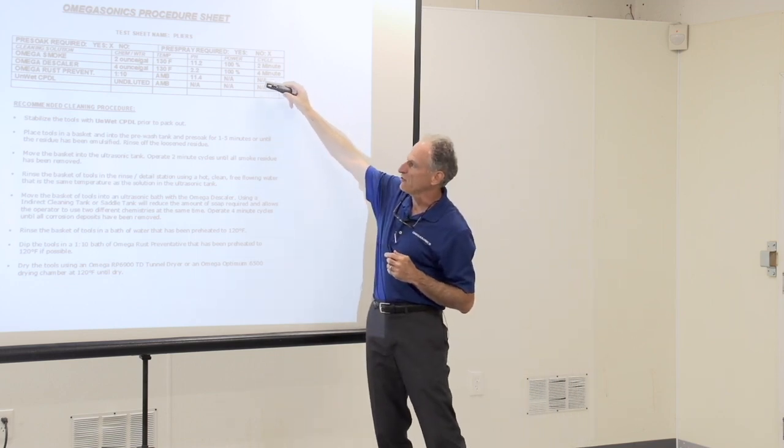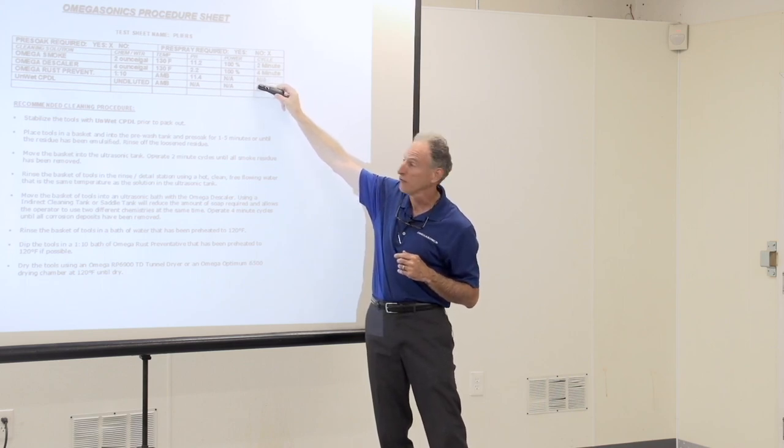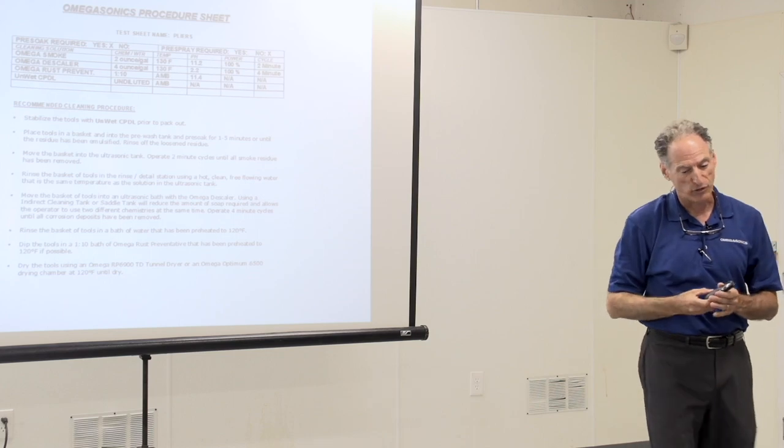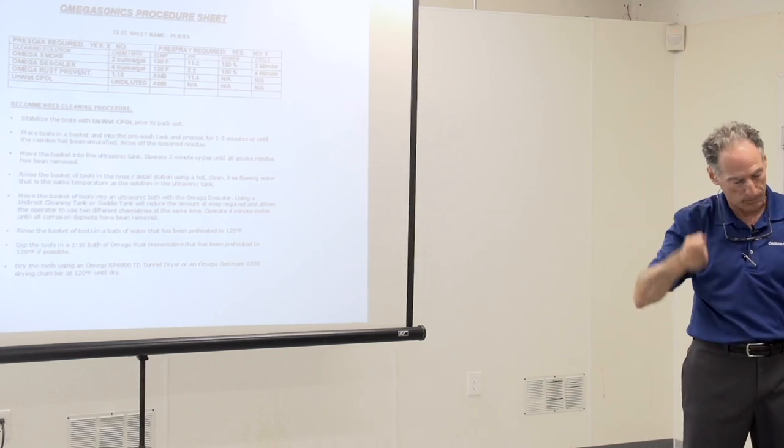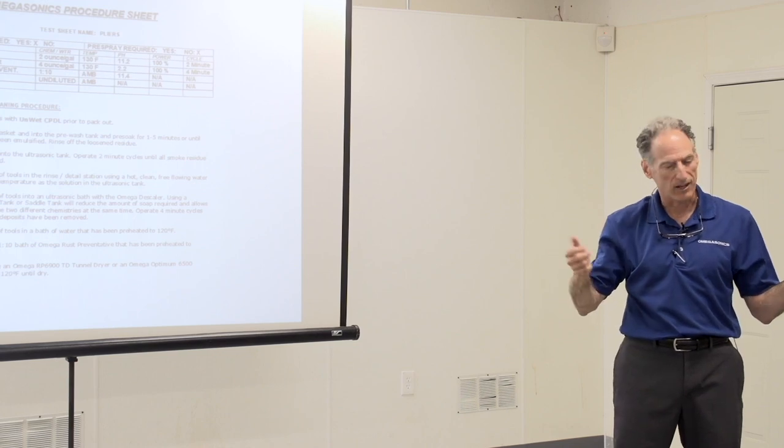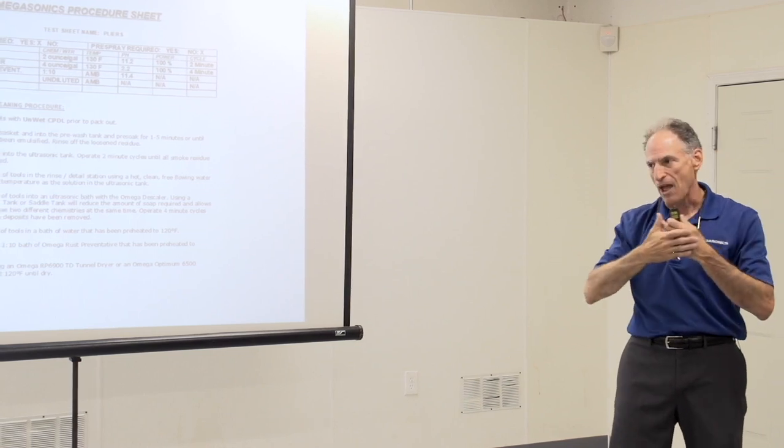You've got to dip it into some type of rust preventative. We have a product called Omega Rust Protectant. What you're going to do is just dip it in, let it sit for a moment, maybe 20 seconds, take those tools out, and then let them air dry.